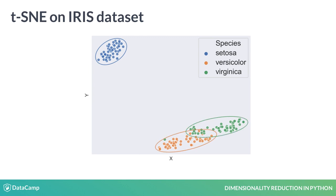However, the iris dataset only has four dimensions to start with, so let's try this on a more challenging dataset.